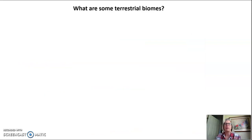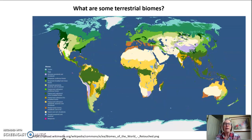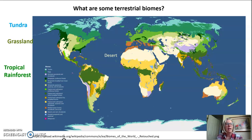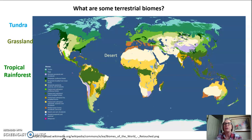So what are some terrestrial biomes? Here we can see a map of the globe with many different biomes indicated in different colors. Up near the top of the globe is the tundra. The grassland is indicated by a pea green shade in the middle of the United States. Desert is indicated by a pale yellow at the top of Africa — that's the Sahara Desert. Tropical rainforest is indicated with a kelly green at the top of South America — that's the Amazon rainforest.